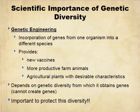When we talk about why we need genetic diversity — we're humans, we're selfish, so a lot of this has to do with what we need ecosystems for. With genetic engineering, we incorporate genes from one organism into another to provide vaccines, more productive farm animals, and agricultural plants with desirable characteristics. If we don't have the genes to draw from, we don't get these new species. It's really important to protect this diversity both for ourselves and for biodiversity and the ecosystem.